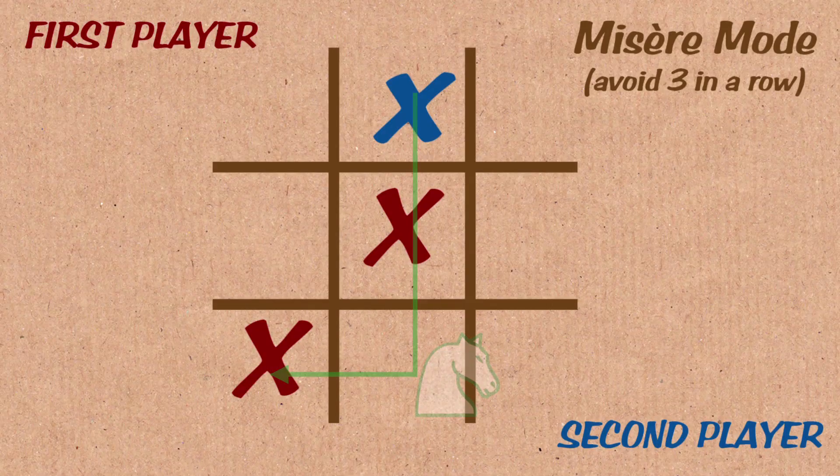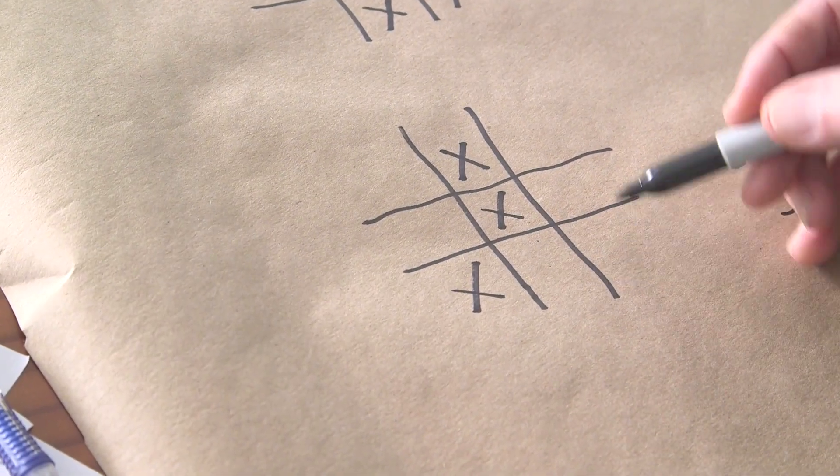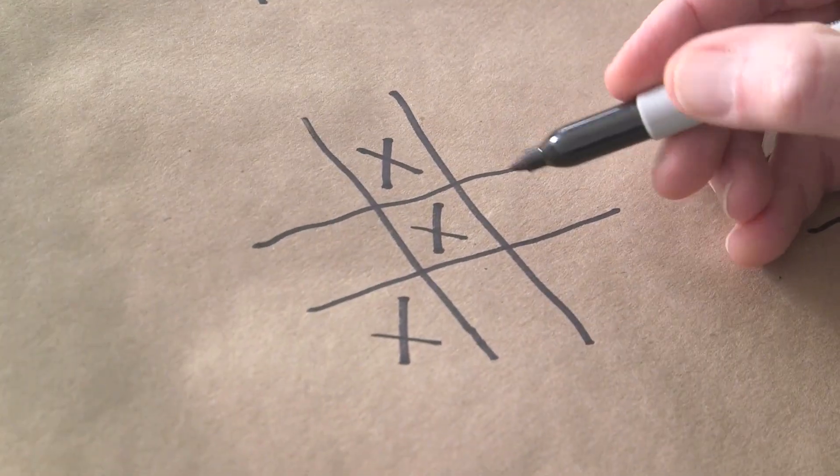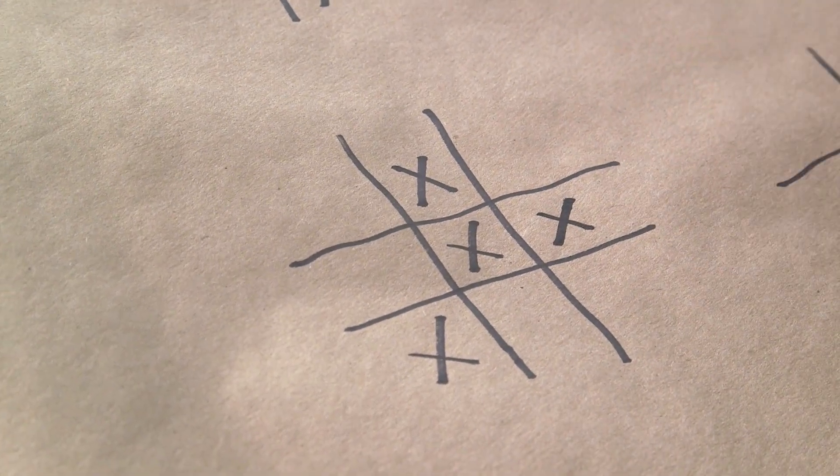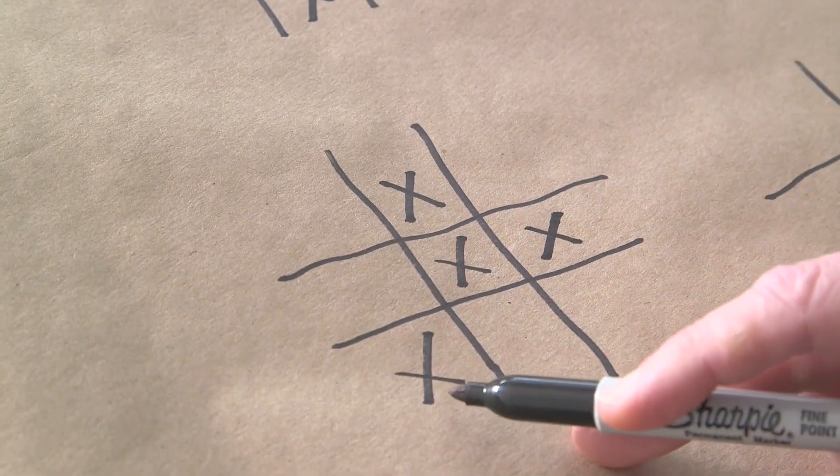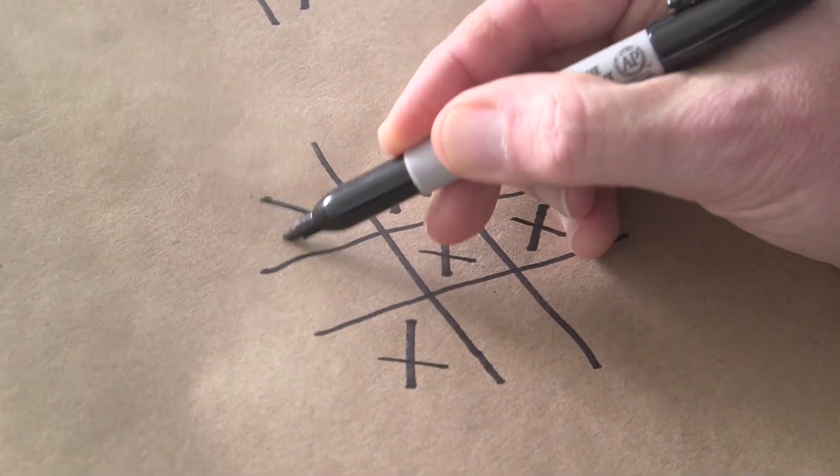Now my opponent has to make some move and doesn't want to make three in a row. So they certainly won't play here. What if they play here? Okay, so let's say they play here. Then I claim again, a good response is a knight's move away. And now here, I've already played here. I can't do this one, but I can do this one. So I go here.